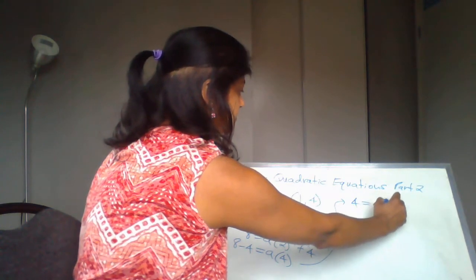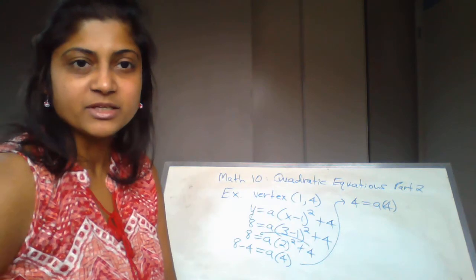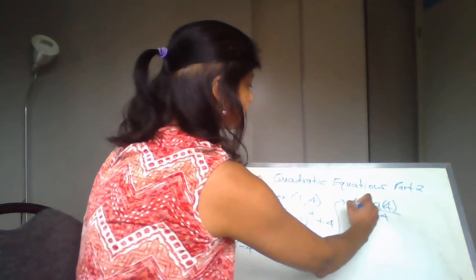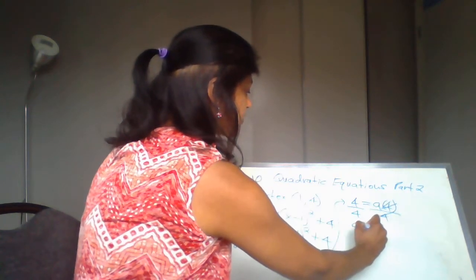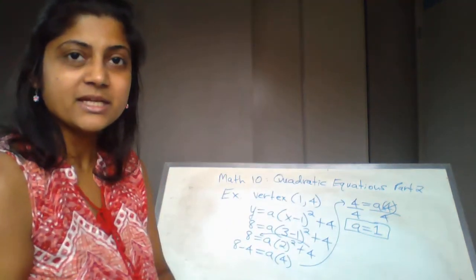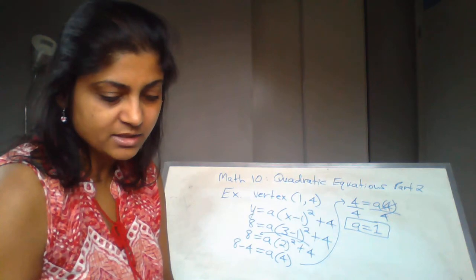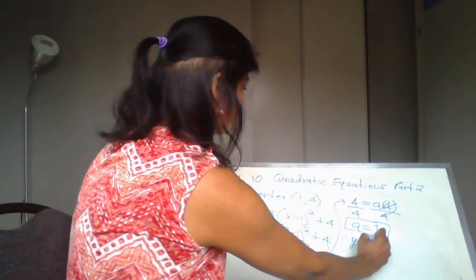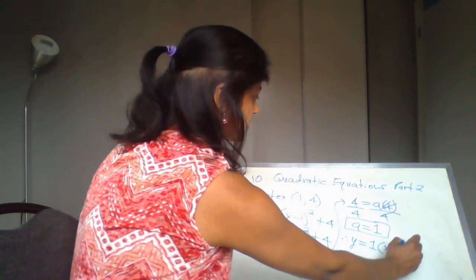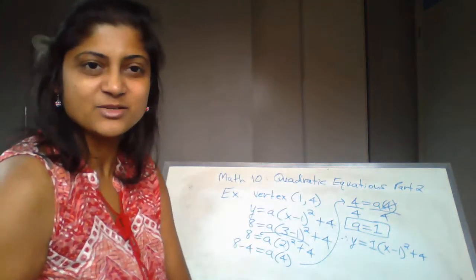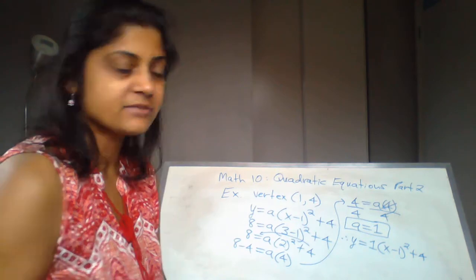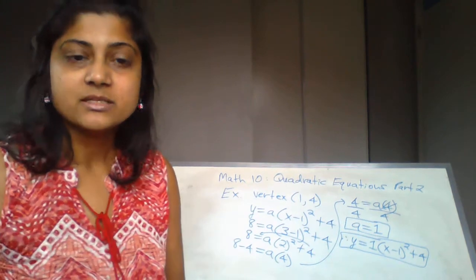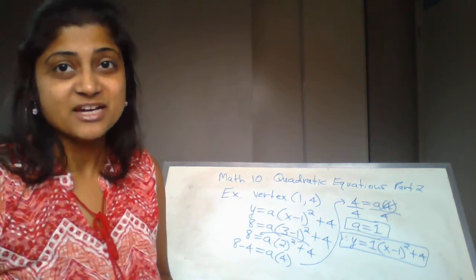So 4 = 4a. I'm going to divide by 4 on both sides, so a = 4 ÷ 4 = 1. I have to restate the actual equation at the very end, so: therefore, y = (x - 1)² + 4. This is the final equation in vertex form.